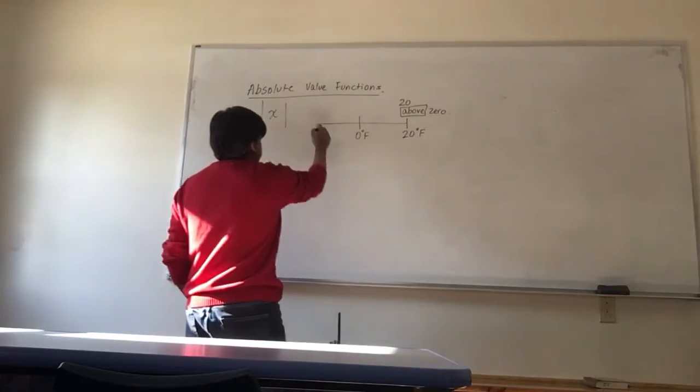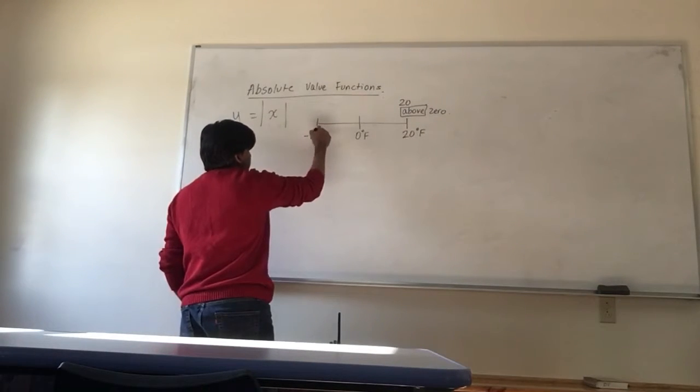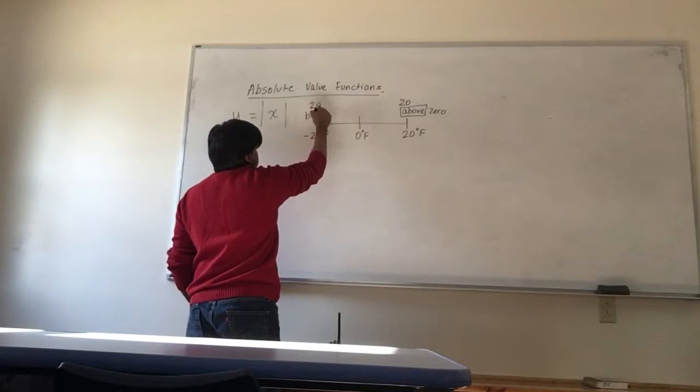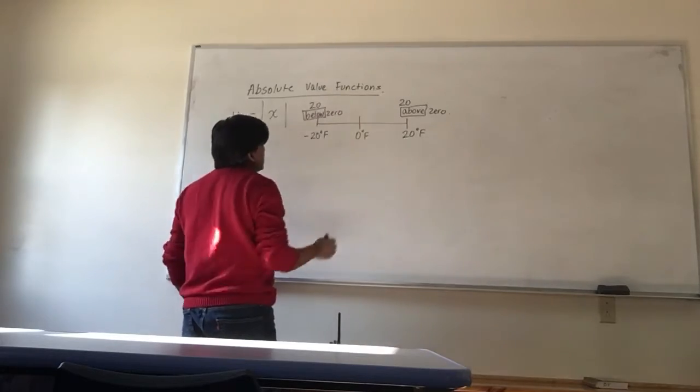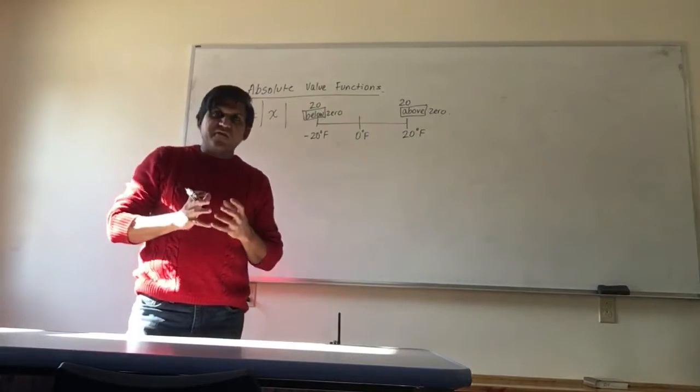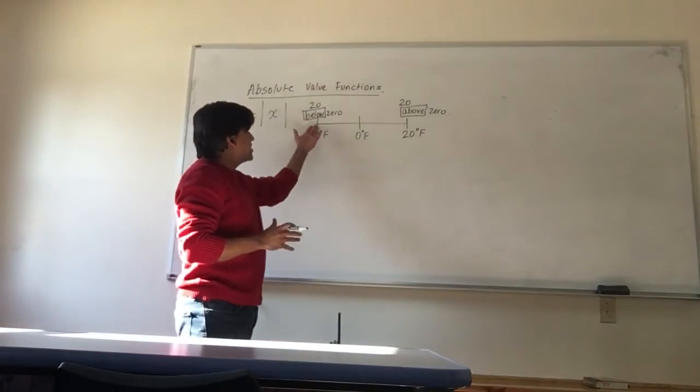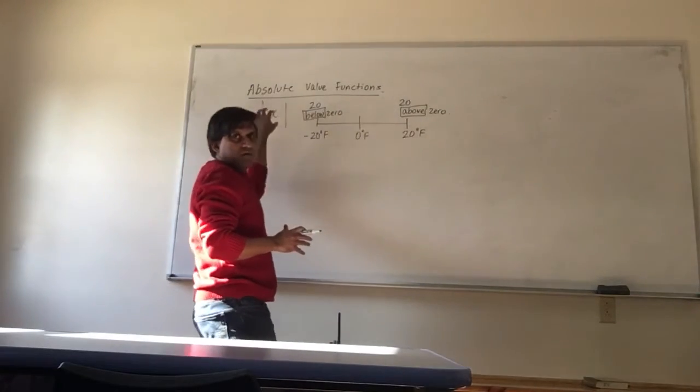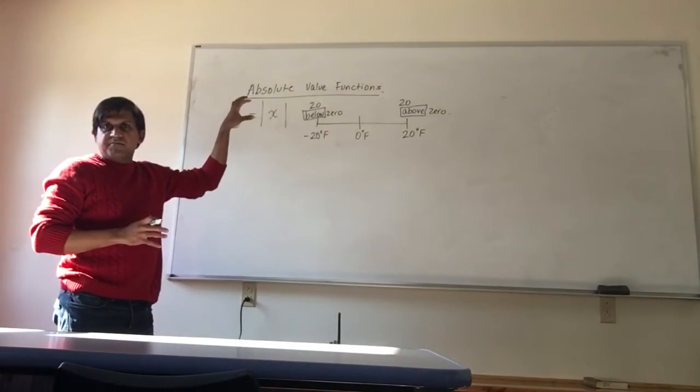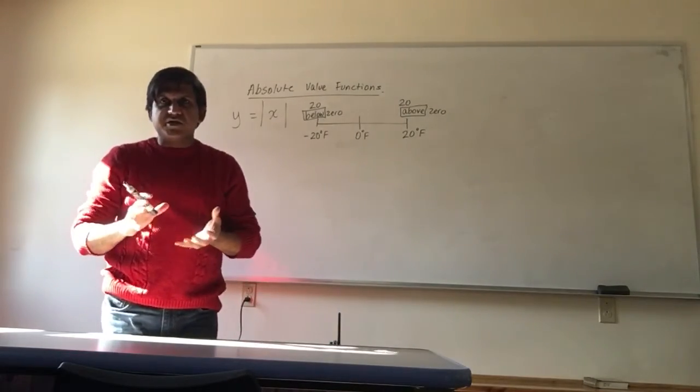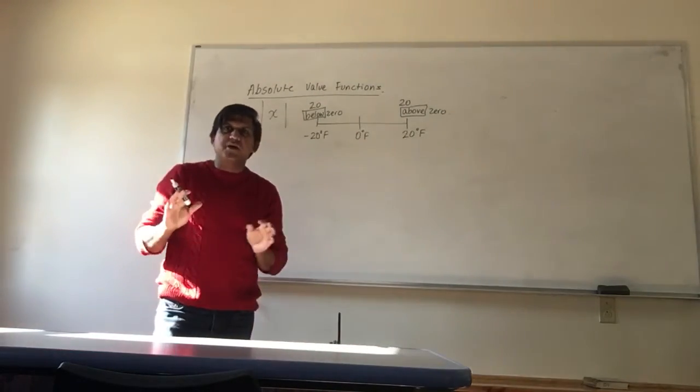And similarly, you might approach a temperature at negative 20, and people might read it just like 20 below 0. So absolute value function is just referring to how far you are from 0. Are you above 0 or are you below 0? It does not take the positive or negative sign into consideration. It makes everything into a positive.